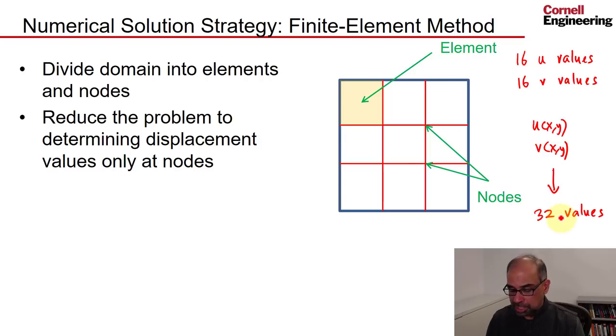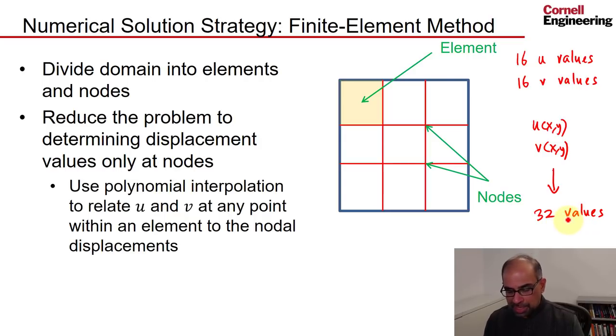If we want to find the value anywhere else, we use a polynomial interpolation to relate U and V at any point within an element to the nodal displacements. If I want to know what's the value of U over there, I have to determine it in terms of the nodal values. And you can see that this would be a weighted average of these four values.